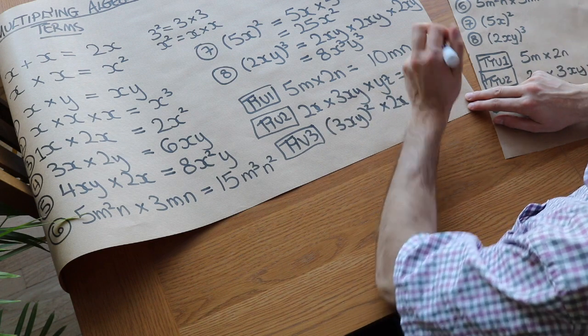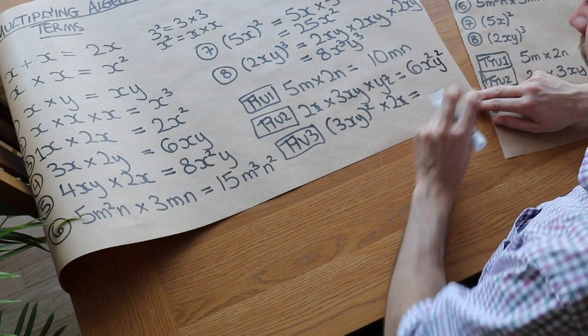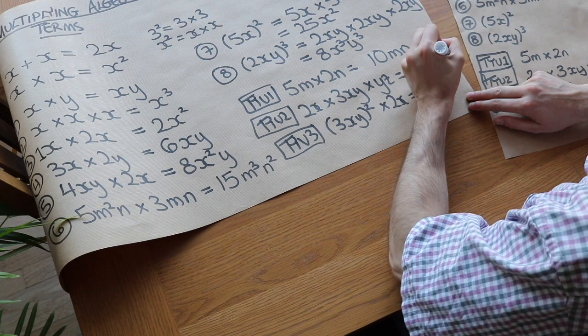Then how many y's we've got? We've got y times y, which is y squared. And then we've only got a single z. So we just put z.